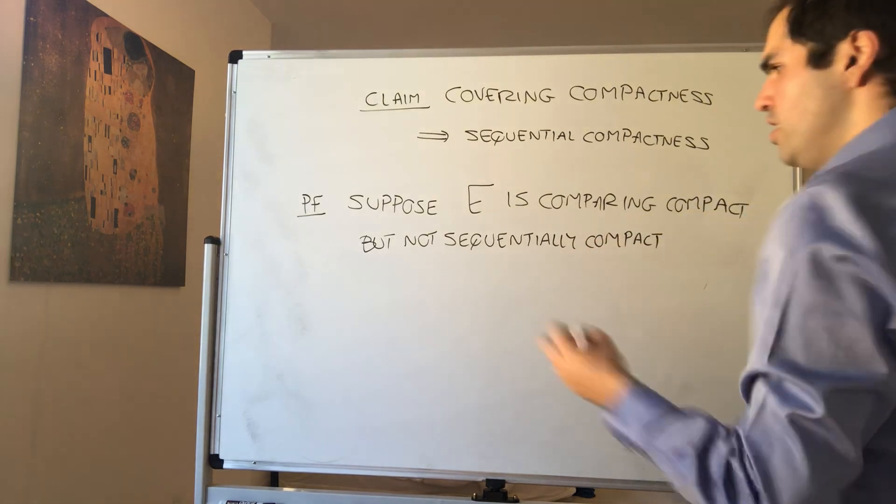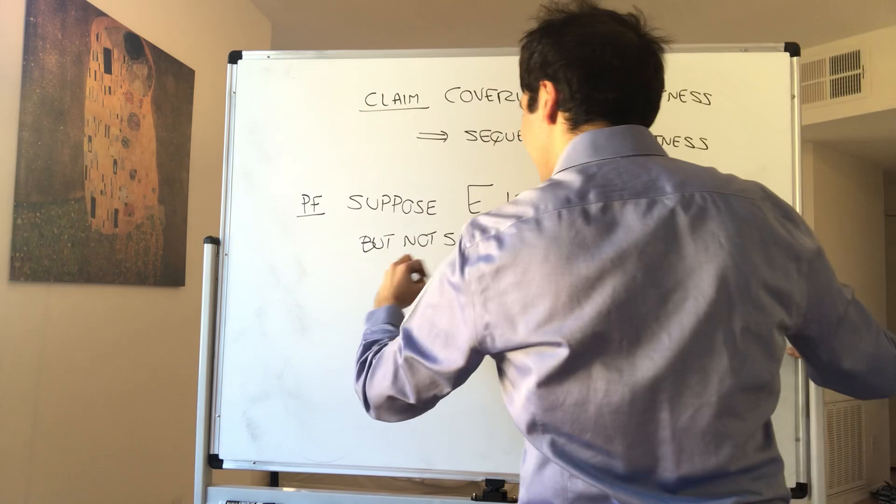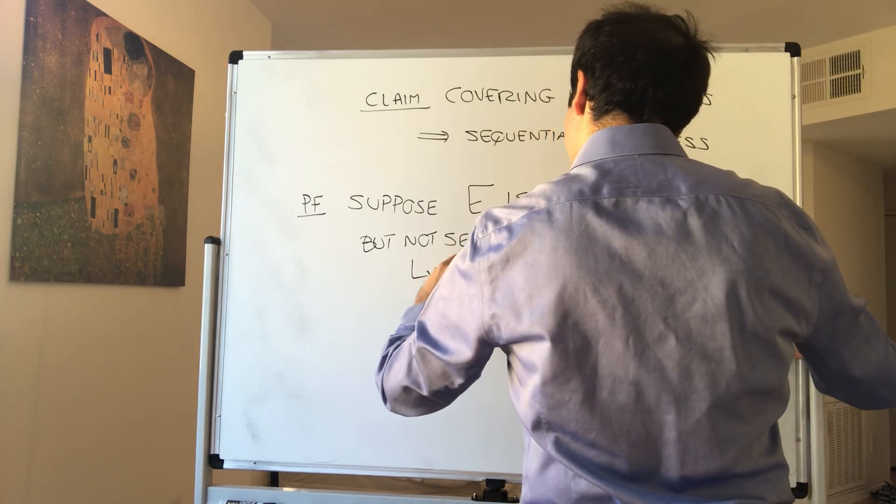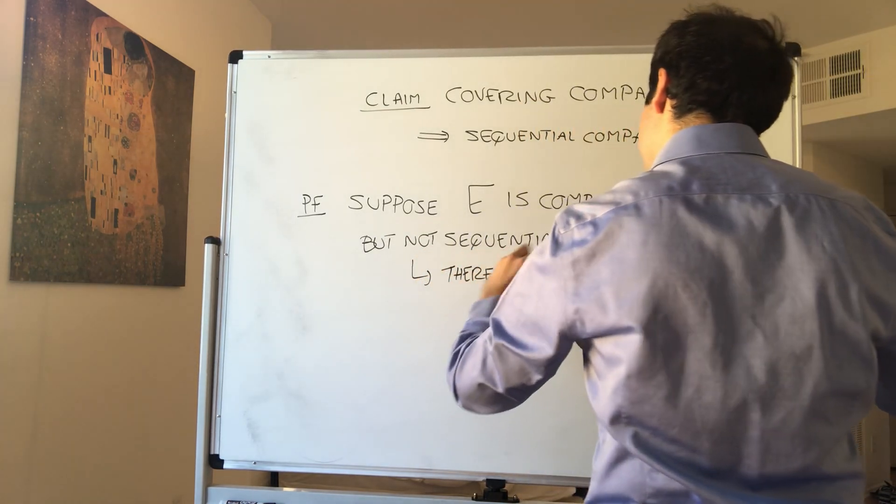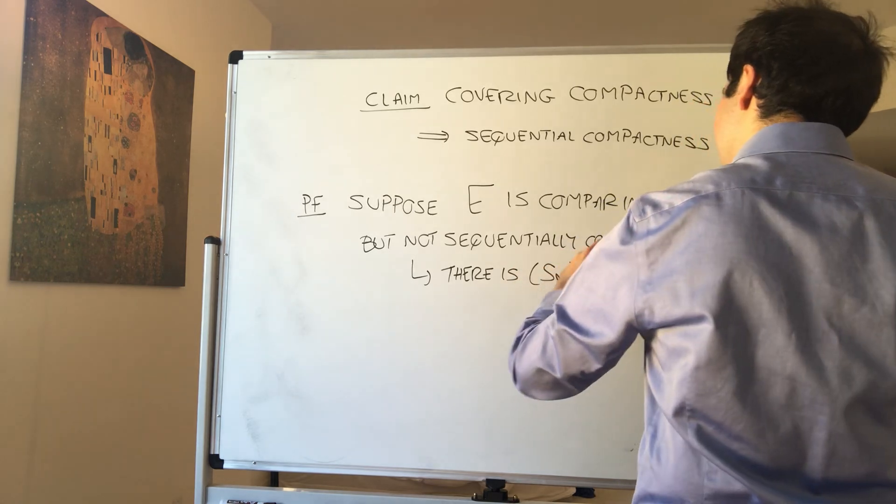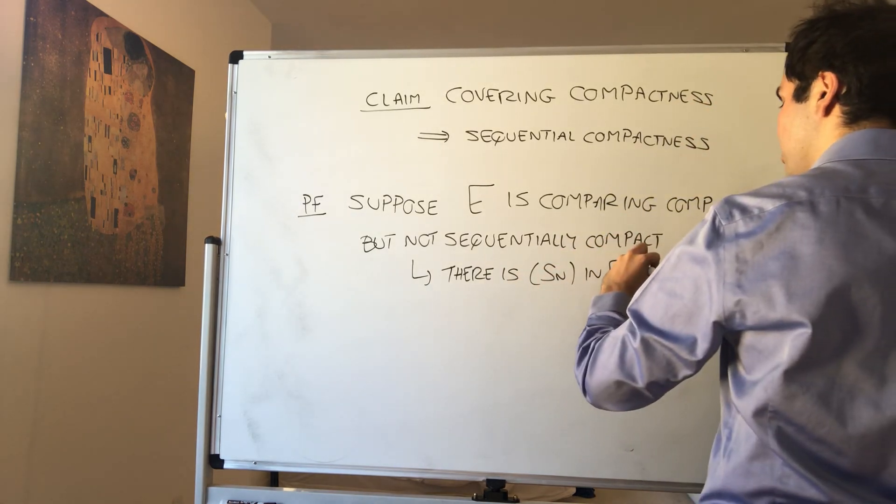What does not sequentially compact mean? It means that there is a sequence, a sequence Sn in E, but with no convergent subsequence.